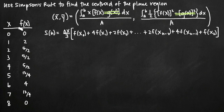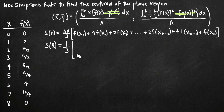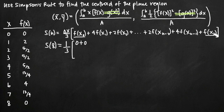In our case, we have 8 subintervals from 0 to 8, so n=8. Δx is the change in x each time — we go from 0 to 1, 1 to 2, 2 to 3, so Δx=1, and we have 1/3 out in front as part of the Simpson's rule formula. For Simpson's rule, you add the first and last f values — which are both 0 here — without any multiplying coefficient. That's f(x₀) and f(xₙ) where n=8.